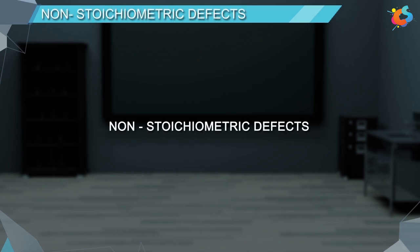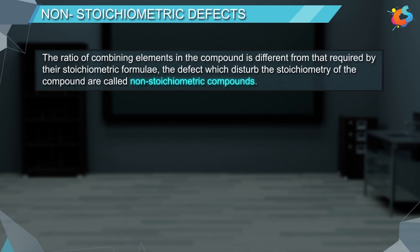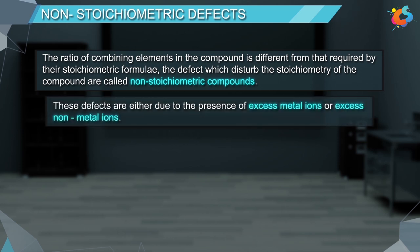Non-stoichiometric defects. The ratio of combining elements in the compound is different from that required by the stoichiometric formulae. The defects which disturb the stoichiometry of the compound are called non-stoichiometric compounds. These defects are either due to the presence of excess metal ions or excess non-metal ions.